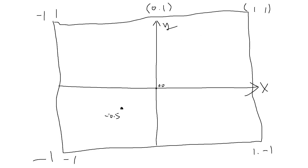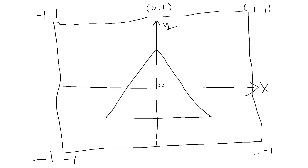We want to draw a triangle that's kind of in the middle. We're trying to draw it halfway to the corner, halfway to the other corner, and then halfway to the top. So the first vertex is -0.5, -0.5 — ignoring Z which is 0. The second vertex: X is 0.5, Y is -0.5, going down. And the third one is X=0, Y=0.5, and Z is again 0. So those are our three vertex coordinates.